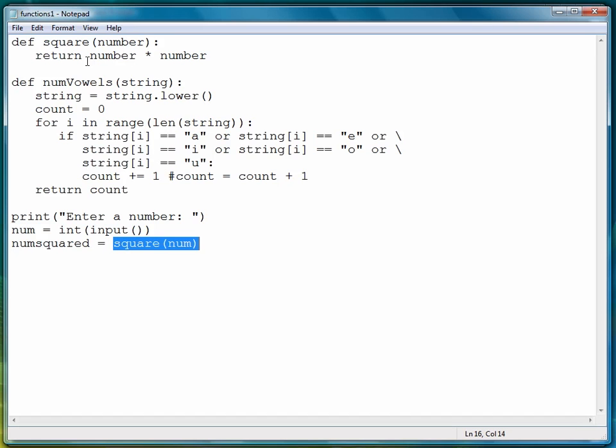So this value, whatever it is, depending on the number that the user enters, then replaces the function call and then is assigned to the variable num squared. And then we can display the result like so.